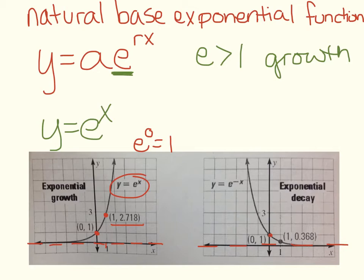But we still have an asymptote at Y equals 0, a point at 0, 1, and then we're coming down at, this would be 1, and then 1 over E, is what that would be.